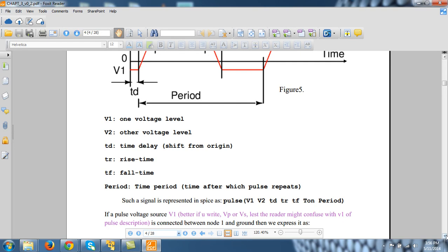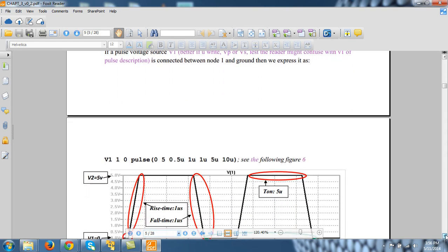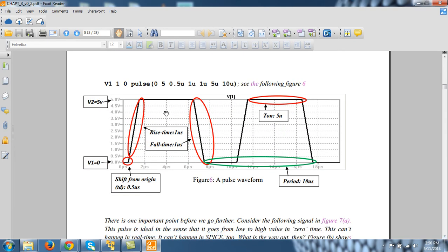Say there is a pulse connected between node 1 and 0. Its value is, you can see, one level is 0, other level is 5 volt, and this time is 0.5 microsecond. The point where it starts rising is 0.5 shift from origin. This is td, 0.5.